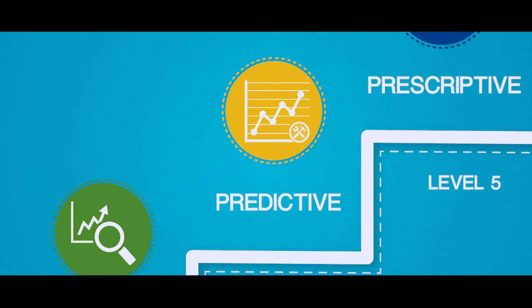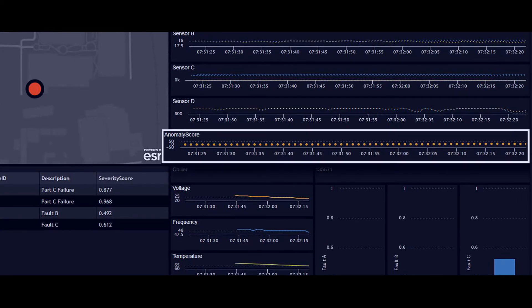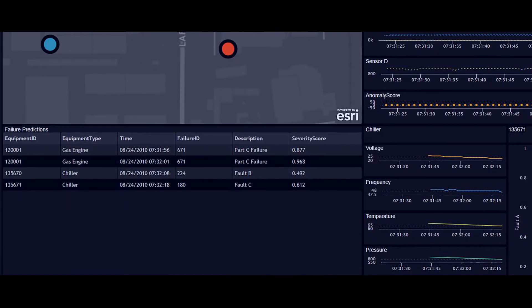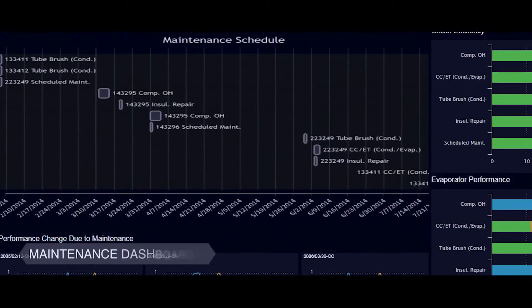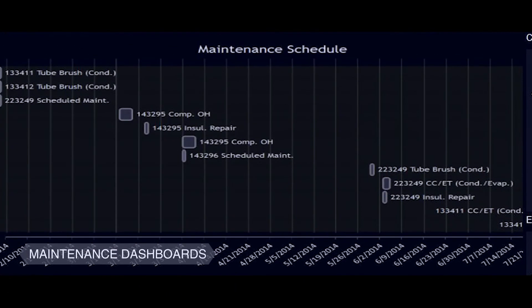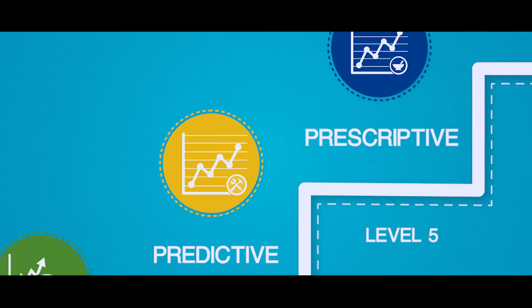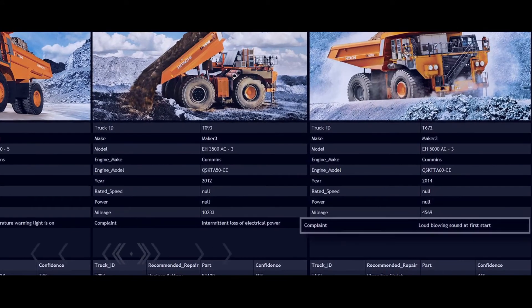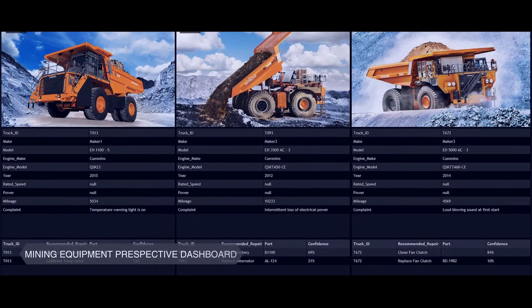Hitachi developed an algorithm to predict an anomaly score for potential faults. The maintenance interventions are further fed into algorithms to increase their effectiveness. Using such prescriptive algorithms, Hitachi prescribes the most effective measures to reduce maintenance time.